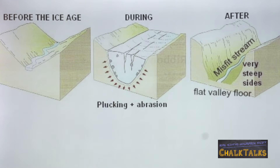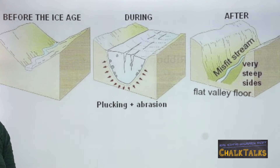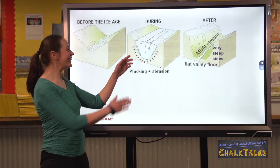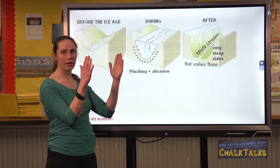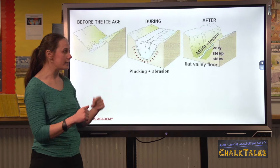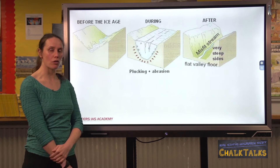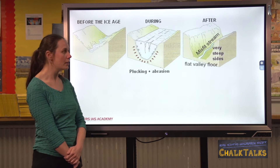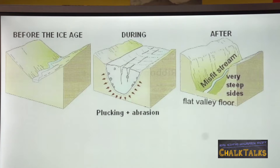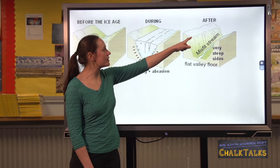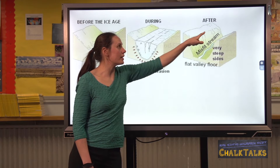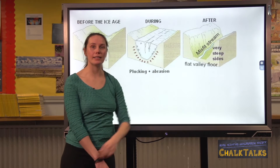Unlike a river, the glacier fills the whole valley and has a lot more erosive power. Once in the valley, the glacier enlarges it by plucking and abrasion, making it wider and deeper. Glaciers also tend to go straight through the bottom of interlocking spurs rather than going round them like a river, meaning the valley is a lot straighter. Once the ice has retreated, freeze-thaw weathering on the sides of the valley makes them less steep.